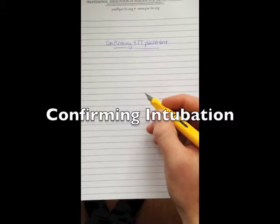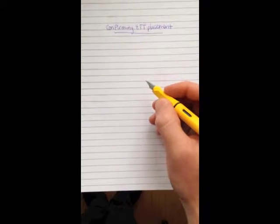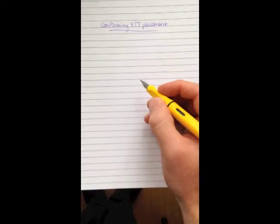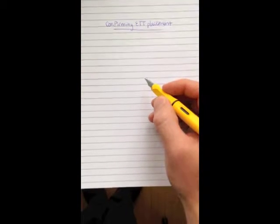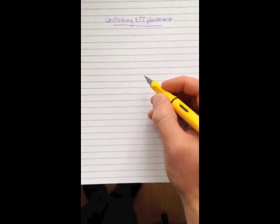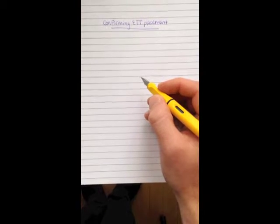I'd just like to do a quick, short video on how to confirm that an endotracheal tube is in the patient's trachea. So after you've anesthetized the patient and you've attempted intubation, how do you actually confirm that the endotracheal tube is in the place that you want it to be, which is the trachea?